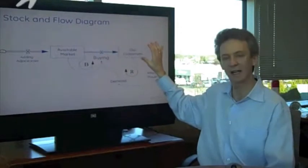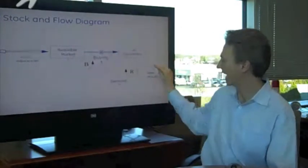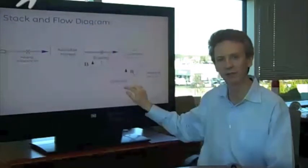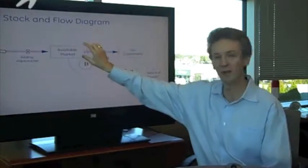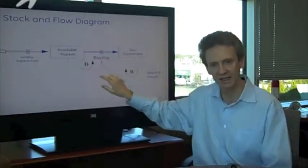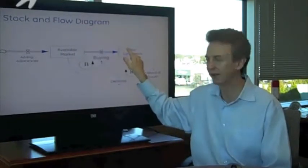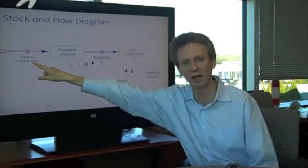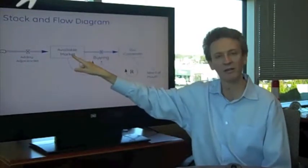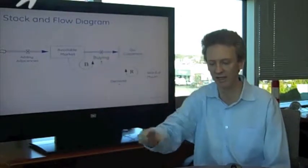Basically you have two stocks. Your customers are a stock and that increases by word of mouth driving demand, driving buying of your products so you get more customers. Your available customers is a stock and that gets drained by the buying. So that's why it's a balancing loop here. And then lastly I added adjacency. So adding adjacent markets adds to your available market. That's basically the model we're going to walk through.